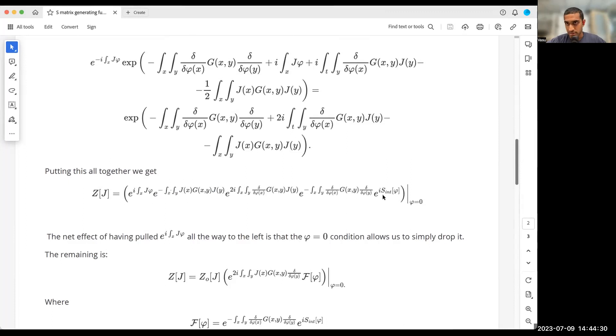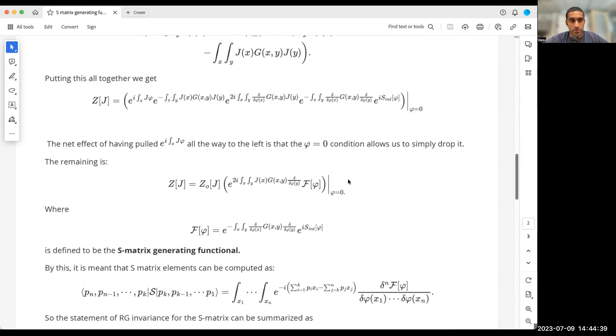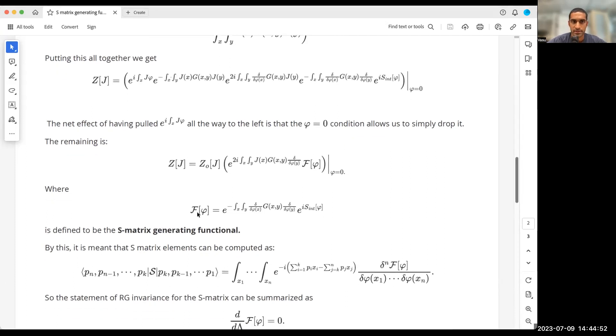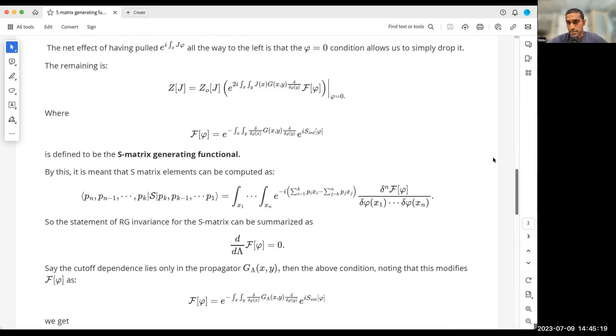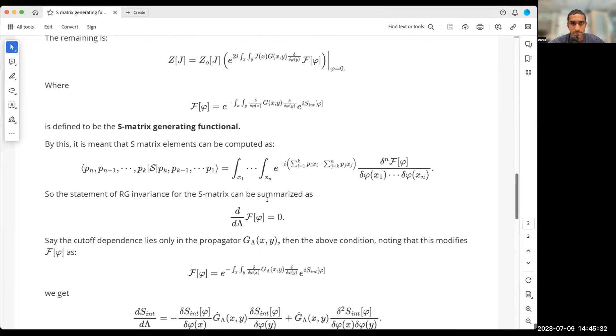We get a mixed term with one functional derivative, J and G, and we retain our two functional derivative terms. The upshot is that the interaction term, the polynomial term, still involves just phi and no functional derivatives. Now we can apply the limit as phi goes to zero, and we get the following expression where we've introduced the object curly F. Curly F, as we'll see, is going to be the generating functional for the S-matrix. I think that's a place to plant a flag because it was illuminating for me to see this object written as such, because I hadn't realized that S-matrix elements can come from a generating function.